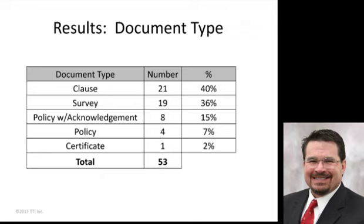There are about a third of the customers that are doing a survey, trying to get an understanding of where their suppliers are in the maturity of their counterfeit risk processes and protocols. So there's a distinction between telling suppliers what you want them to do versus asking to see what they're doing. Two-thirds of the people are telling suppliers what to do, and a third are asking what they're doing, roughly.